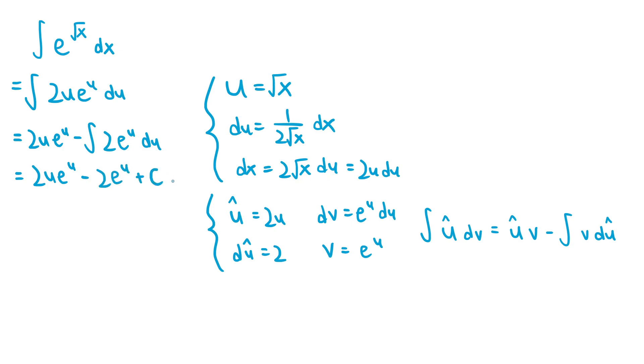If we substitute the square root of x back in for the u, this expression becomes 2 square root of x e to the square root of x, minus 2e to the square root of x, plus c, which is the final answer.